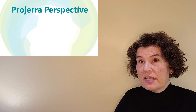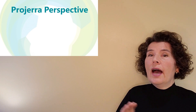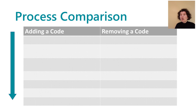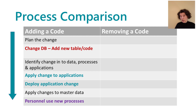There are seven basic steps that need to be performed, and these steps change order depending on whether you're adding or removing a code or classification. When adding a new reference data code or table, you will need to: plan the change, make the database change by adding the new table or code, identify the changes to the master or reference data business processes, apply changes to the applications that use the data, deploy the change into a production environment, apply the changes to the master or reference data as required, and then personnel can begin using the new processes.